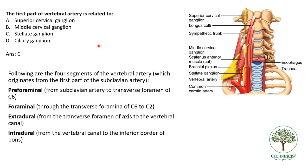The last question of this section: what is the first part of the vertebral artery related to — the superior cervical ganglion, the middle cervical ganglion, the stellate ganglion, or the ciliary ganglion? The answer is the stellate ganglion. The vertebral artery arises from the subclavian artery and is divided into four segments. The first segment, from its origin to the transverse foramen of the sixth cervical vertebra, is related only to the stellate ganglion. As it moves upward, the second part is related to the middle cervical ganglion, and further up is the superior cervical ganglion.